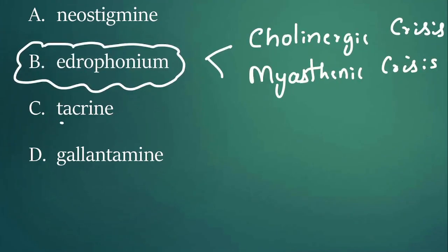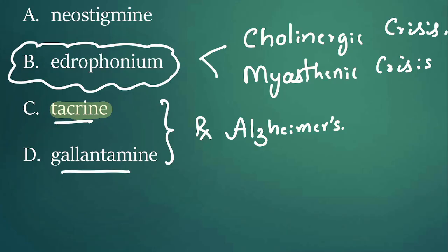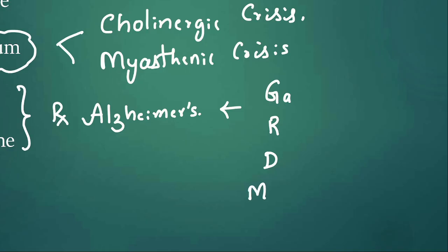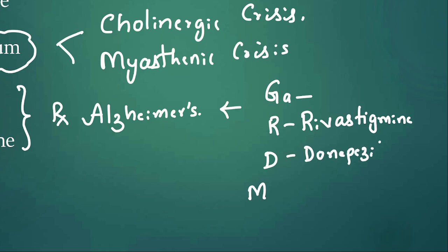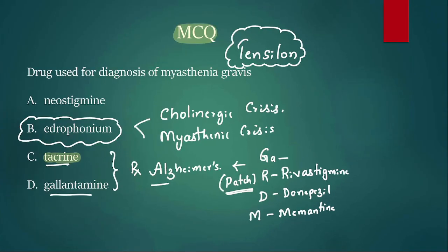Tacrine and galantamine are drugs used to manage Alzheimer's disease. Tacrine is discontinued now because of hepatotoxicity. For other Alzheimer's drugs, remember the mnemonic 'GUARD THE MEMORY': G for galantamine, R for rivastigmine, D for donepezil — which is the drug of choice for Alzheimer's disease — and M for memantine. Rivastigmine is available as a patch formulation.